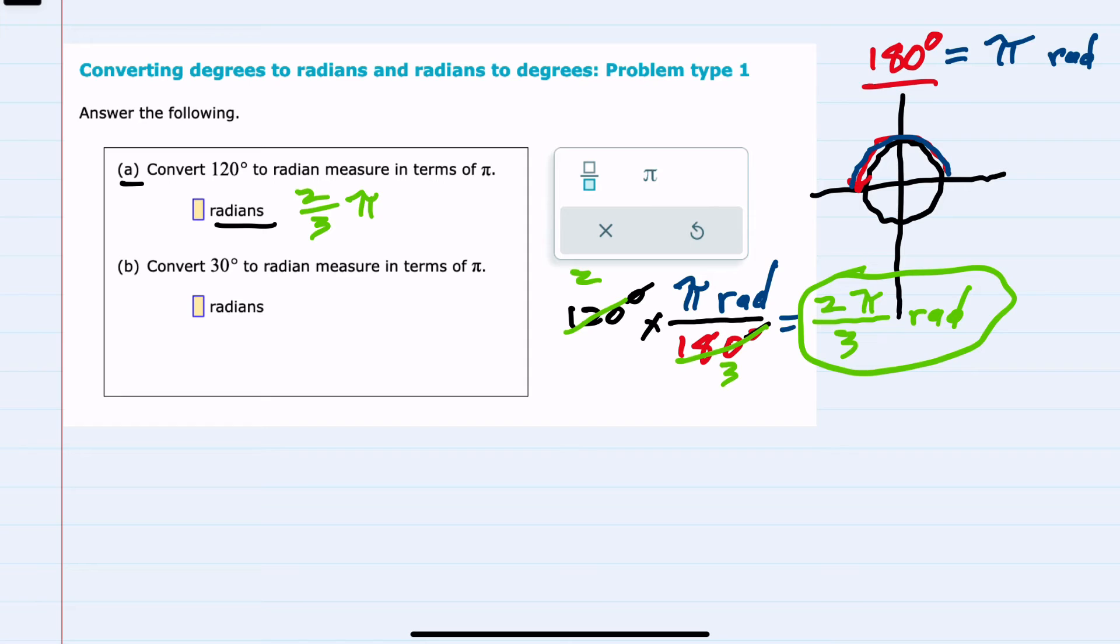Part B is the same sort of conversion, except we are starting with 30 degrees. Our conversion factor, we would still want 180 degrees on the bottom, so that the degrees will cancel, and pi radians in the numerator.